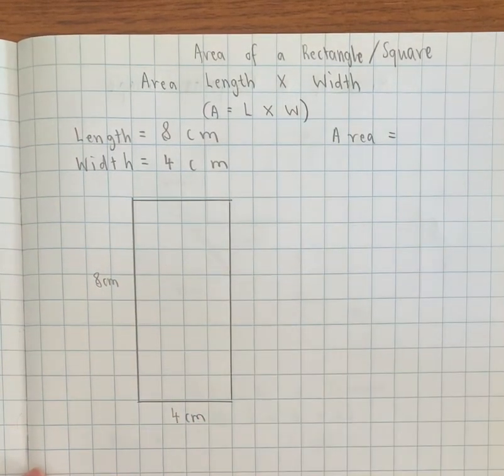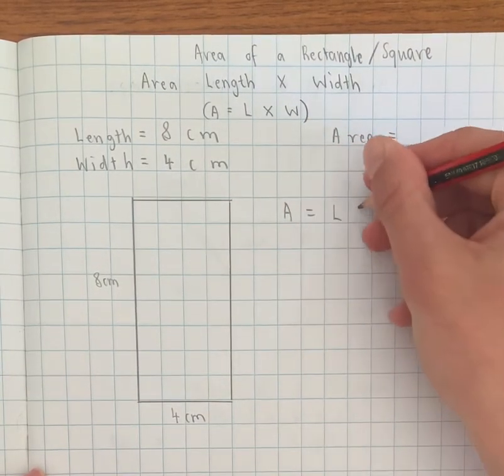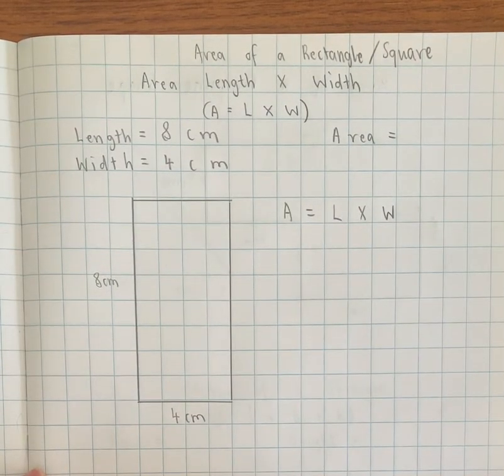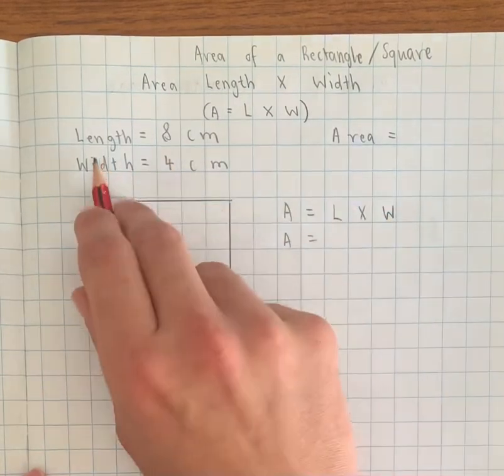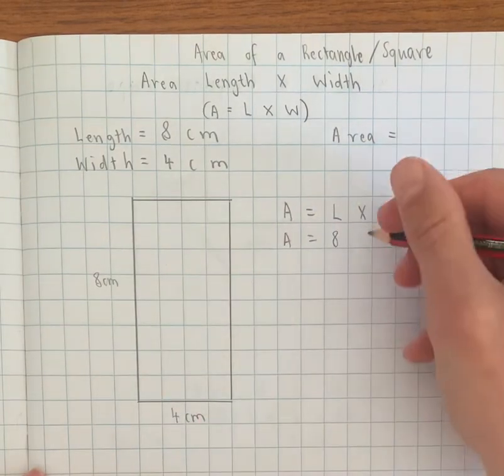So to begin with I'm going to use the formula, so what I like to do is write A equals length times width, and then what I do is I sub in the dimensions. So A equals length was 8 centimeters times the width of 4 centimeters.